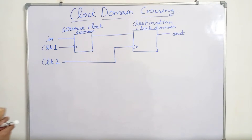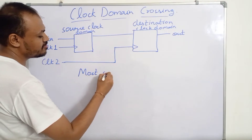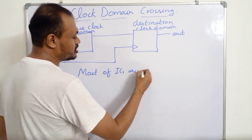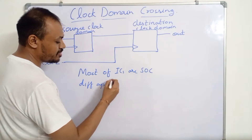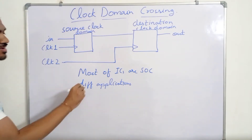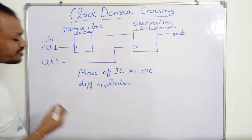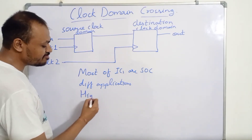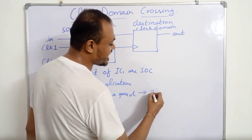In modern VLSI designs, most ICs are system-on-chip. What it means is that there are different applications running on the same chip, and all the different applications have different speed requirements at which they operate. Higher the speed of operation, higher the performance.